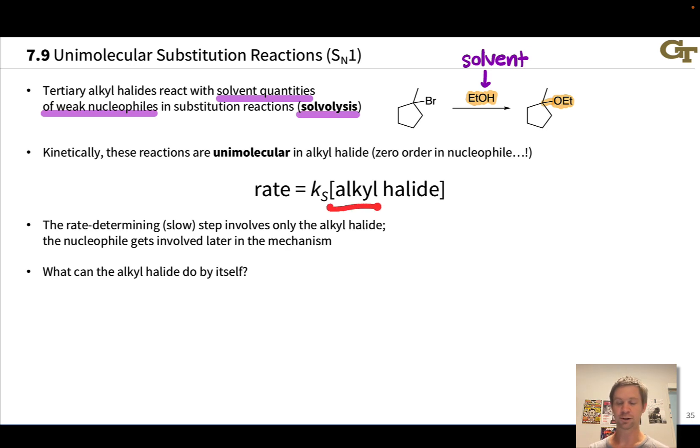However, the concentration of the alkyl halide does affect the rate, and the reaction is first order in alkyl halide. So unimolecular in alkyl halide, in other words, and zero order in nucleophile. This means that mechanistically, the rate determining step, or the slow step, involves only the alkyl halide doing something. And once the alkyl halide has done this relatively slow process, the nucleophile then gets involved in a later step in the mechanism.